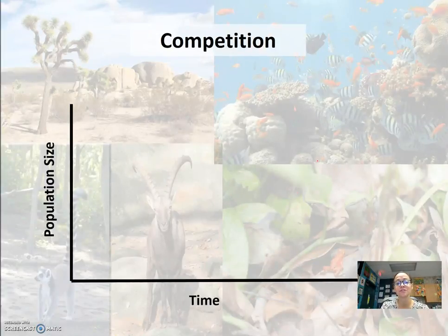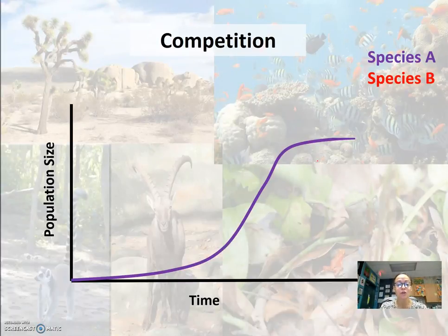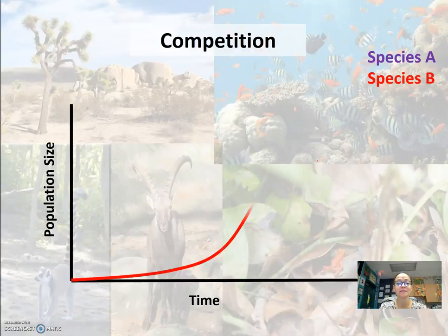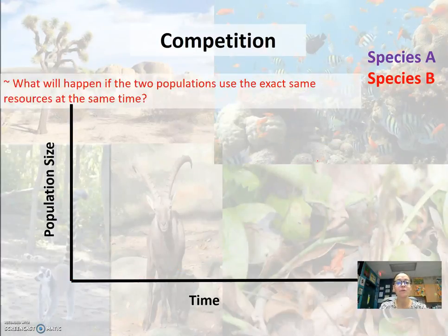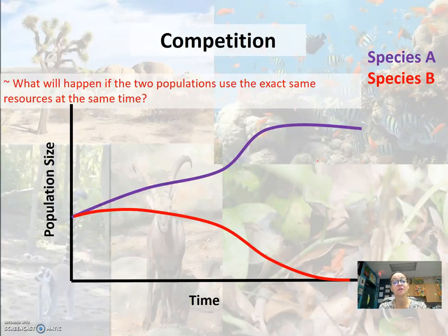When we look at competition and population size: if species A exists by itself, only competing with its own members, you'd get a logistic growth graph and eventually reach carrying capacity. However, if you introduce species B, it also does well by itself. But if two populations use the exact same resource at the same time, you'll have competition, and one species will be better at competing than the other. Species A thrives while species B's population decreases and may have to emigrate to find resources or go extinct.